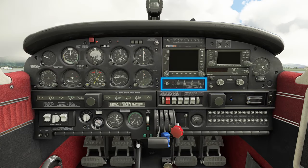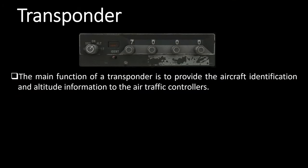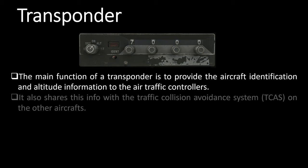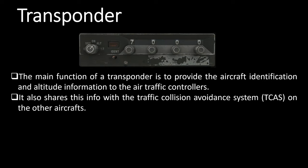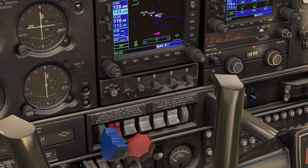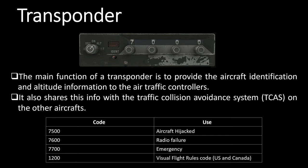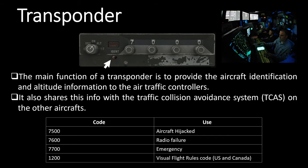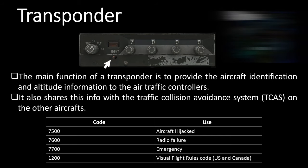Moving forward, below the GNS530 there is the transponder. The main function of a transponder is to provide the aircraft identification and altitude information to the air traffic controllers. It also shares this information with the traffic collision avoidance system, or TCAS, on other aircraft around it. Each aircraft is assigned a squawk code by the air traffic controller and that is how it is identified in that airspace. There are different squawk codes you can put in to relay a particular condition in flight. The knob needs to go to ALT whenever you start taxiing and to standby when you land. You press IDENT only when the ATC tells you to do so, which helps them identify the aircraft as it shows up blipping on their radar.